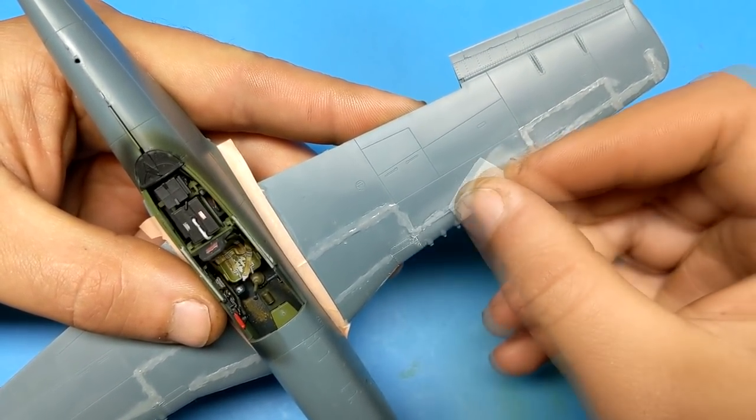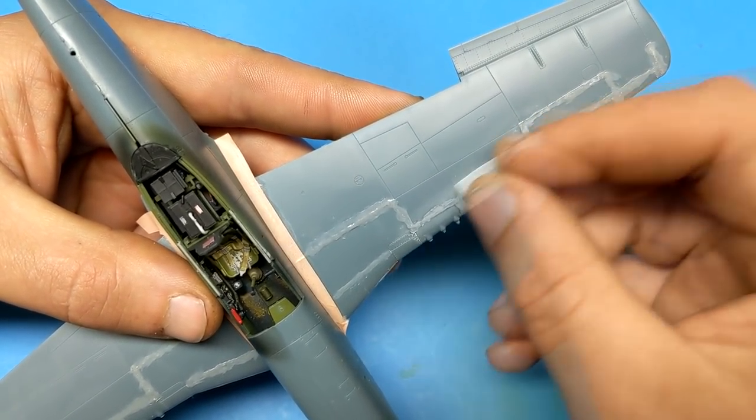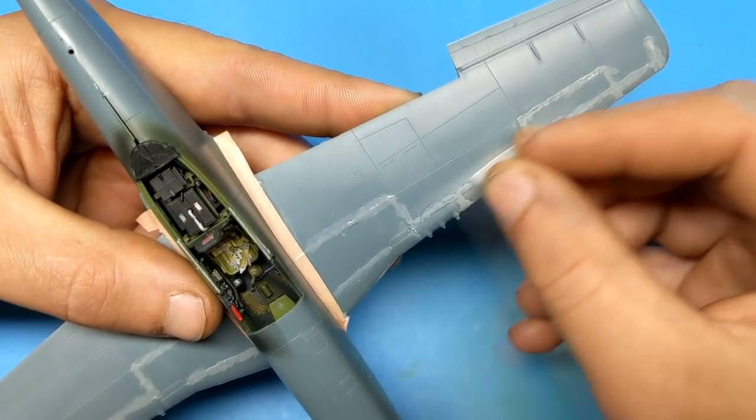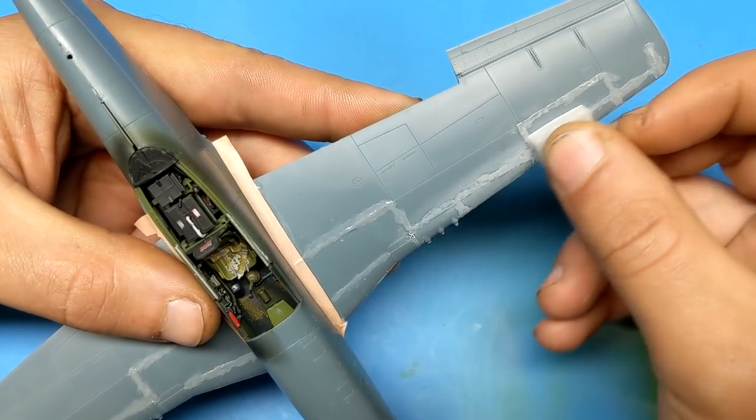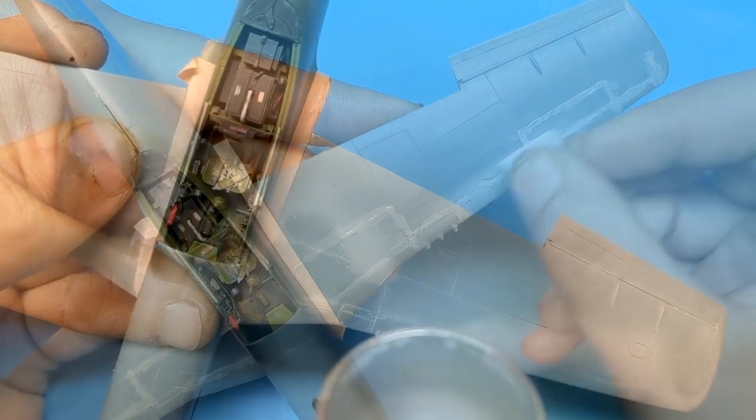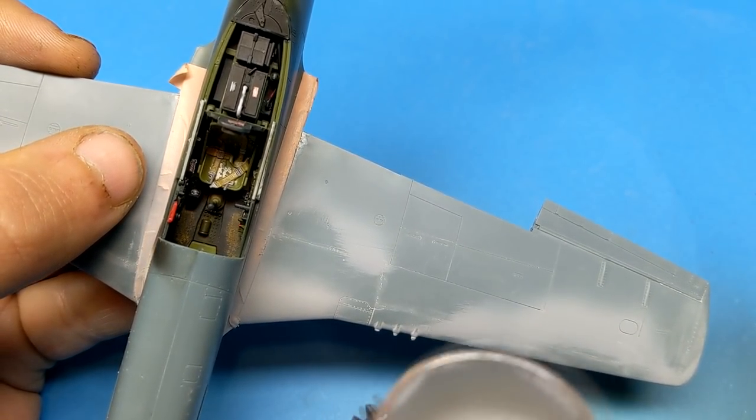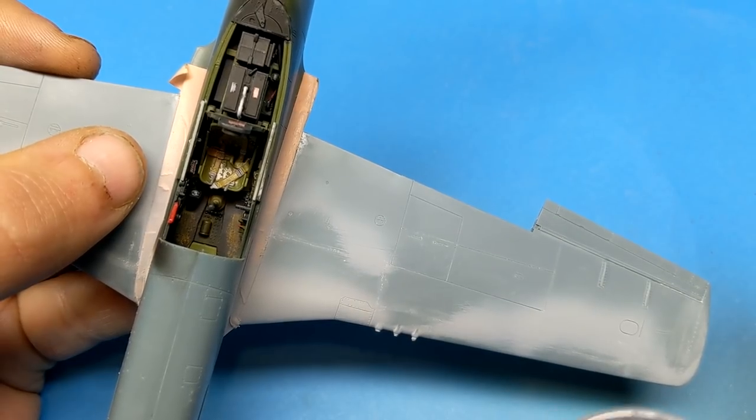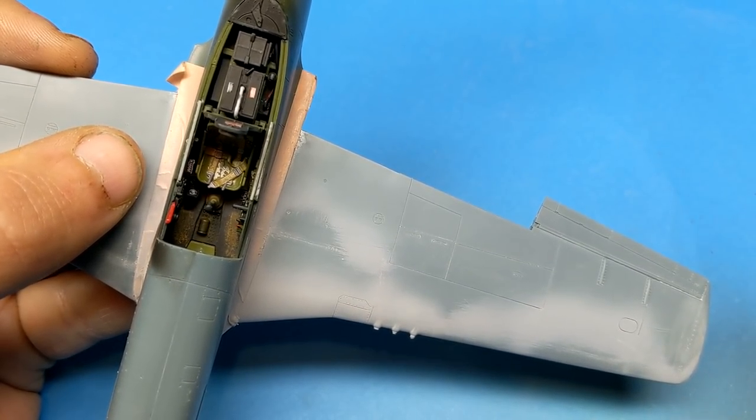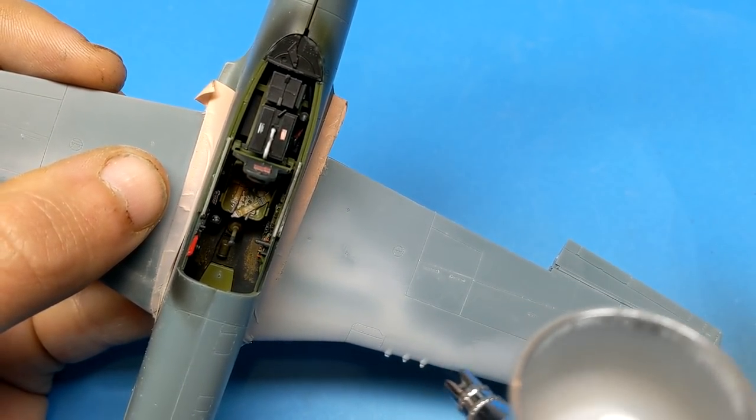The nice thing about sprue goo, because it's made of the same material as the styrene plastic of the kit, is that instead of just covering up a seam, it actually melts it and becomes part of it. So it's great for filling cracks. In the past, I've used putties to fill cracks and seam lines. The only problem is it doesn't fully bond to the plastic. And if you flex the wing by accident, you may pop that seam back open, which means you need to stop and repair your previous repair.